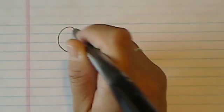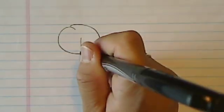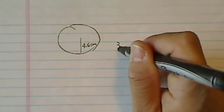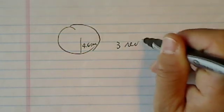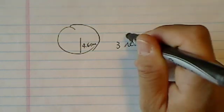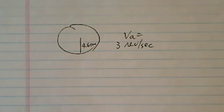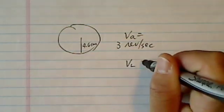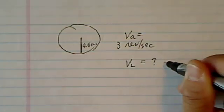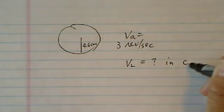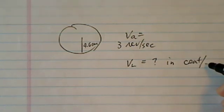Alright, let's go on to the second question. We're given that a gear has a radius of 4.6 centimeters, and it makes 3 revs per second, which is angular velocity was given. Angular velocity is here. And then we're asked to find linear velocity equal to what? In centimeters per second.